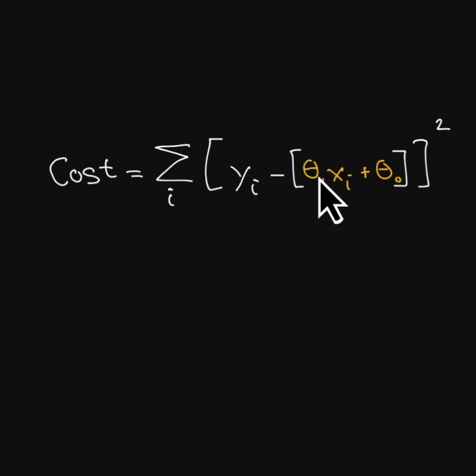If the learned parameter theta i is way too high, then even small changes in the input x will lead to large changes in the prediction. This is overfitting.